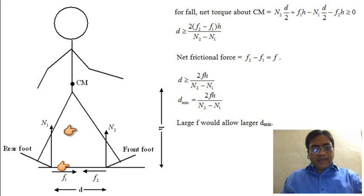Due to N1, N1 multiplied by perpendicular distance, so N1 into D by 2. And then due to F2, F2 multiplied by the perpendicular distance, F2 into H.